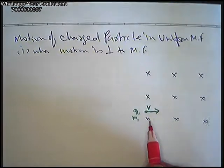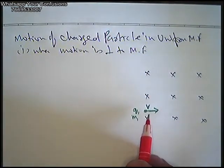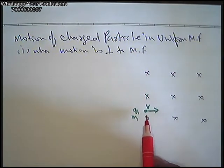The magnetic force acting on the charged particle in a uniform magnetic field is called the Lorentz magnetic force. And to find the direction of that magnetic force, we use Fleming's left hand rule. So what is Fleming's left hand rule?